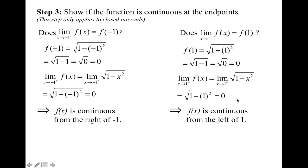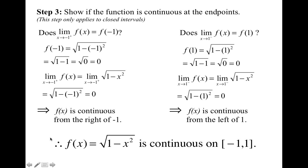Now that we've checked the endpoints, we can make an overall conclusion. The three-dot symbol means 'therefore' and is used to conclude proofs. Therefore, f of x equals the square root of 1 minus x squared is continuous on the closed interval from negative 1 to 1.